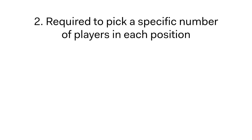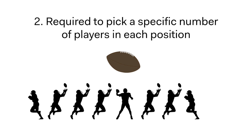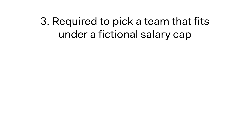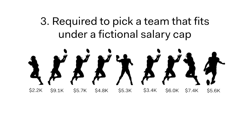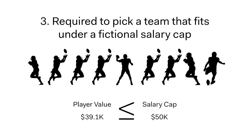Second, participants are required to pick a specific number of players in each position. This rule is sport-dependent, but a daily fantasy American football game might require you to pick one quarterback, five receivers, two running backs, and a kicker. Lastly, participants must pick a team that fits under a fictional salary cap. Game organizers assign a fictional salary to each player, usually based on that player's expected performance. Star players usually have a higher fictional salary than bench players, and each participant must assemble a team whose combined fictional salaries are less than or equal to a particular limit, usually referred to as a cap.